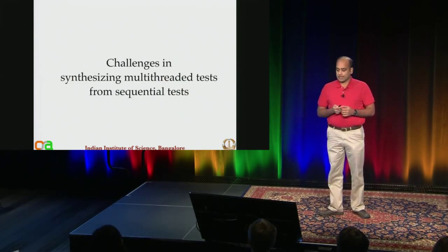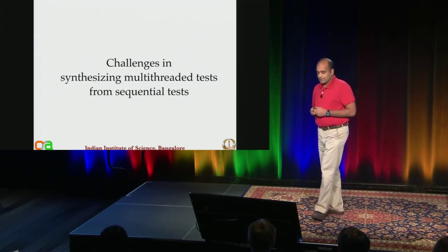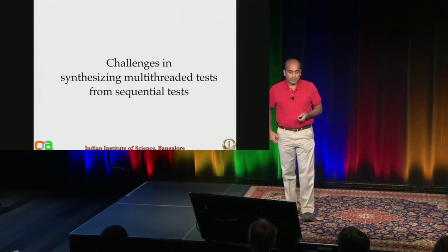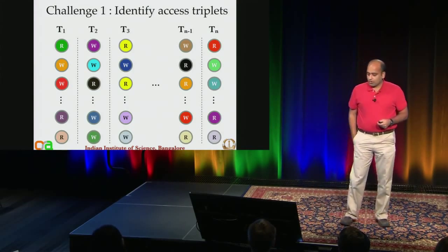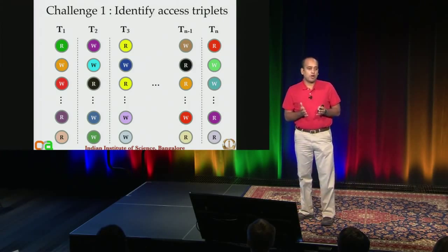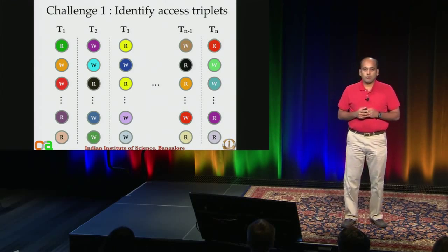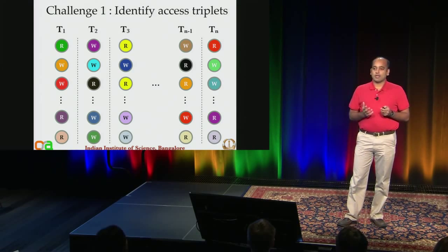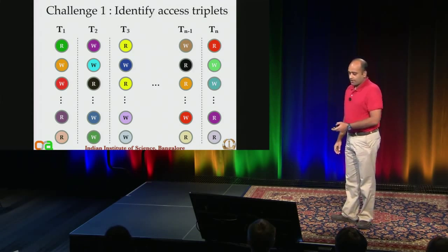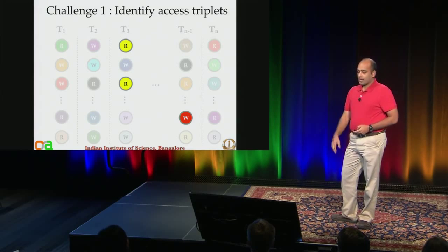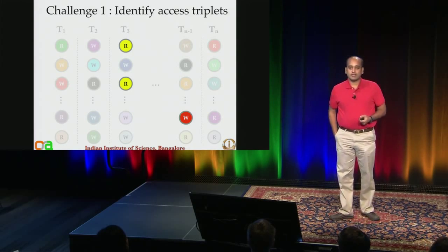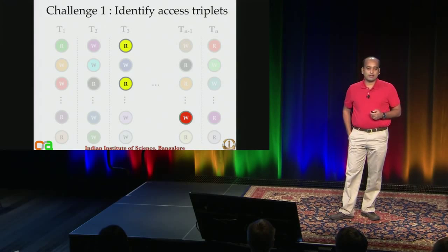The goal is how to generate these tests. There are a number of challenges in synthesizing multithreaded tests from sequential tests. Say I have sequential tests T1 through TN, each making a sequence of read and write accesses. Since these are sequential tests, there is no notion of shared memory location. So how do I find access triplets P, C, and R — such as RRW, WWW, RWW, WRW — that will expose an atomicity violation? There may be such a triplet in two sequential tests that, when put together, can cause a problem.